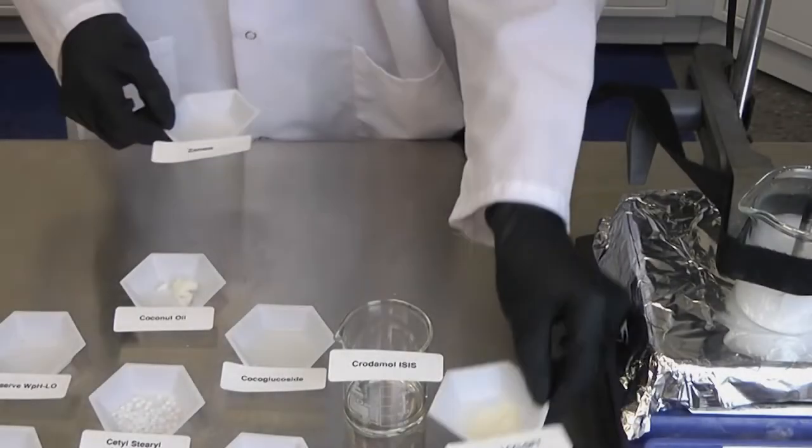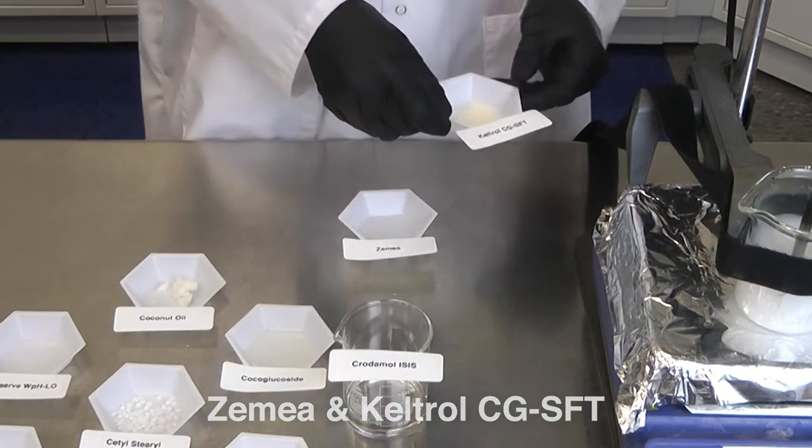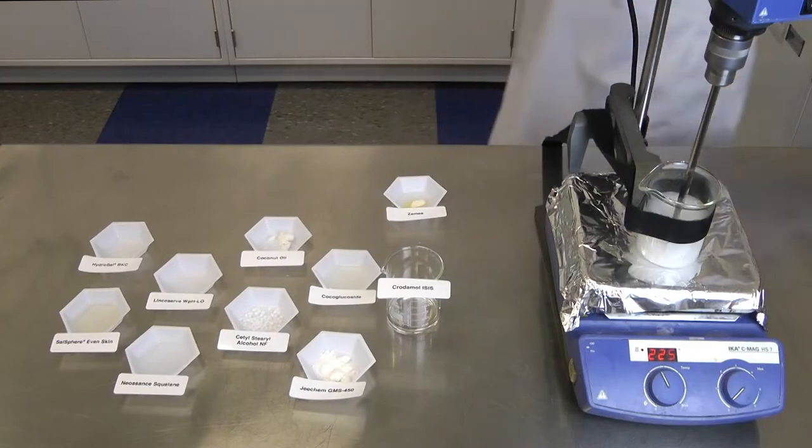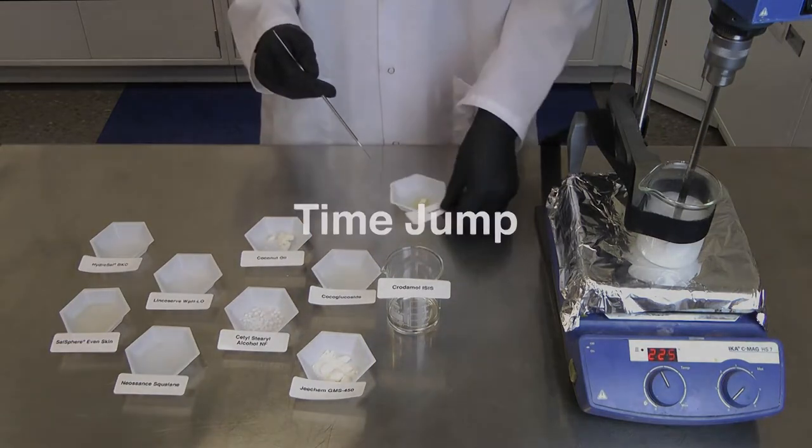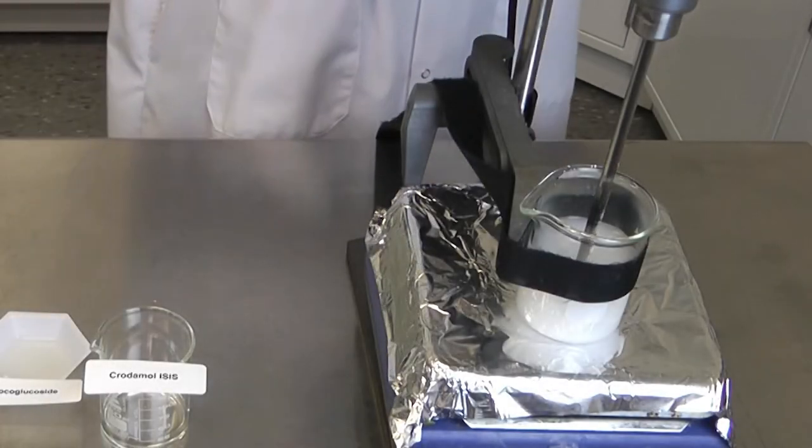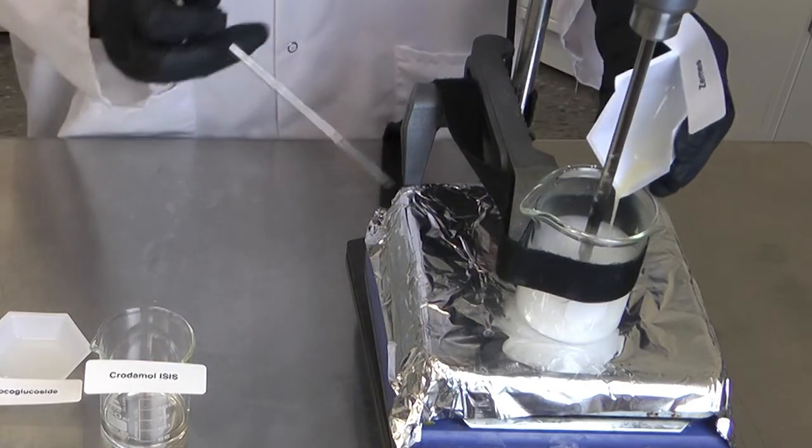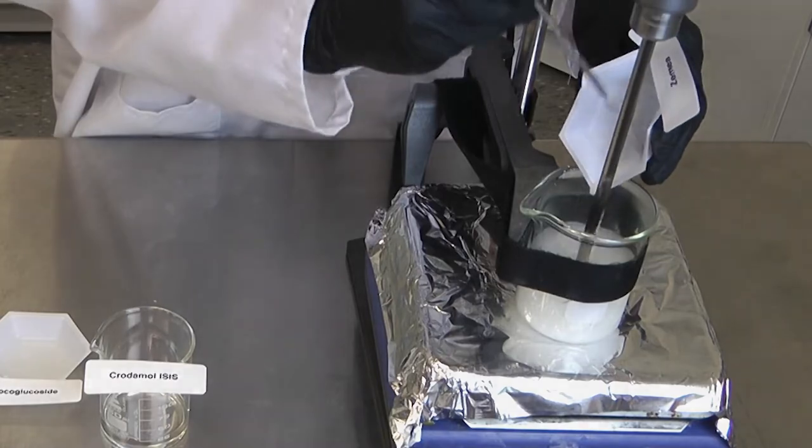Our next step is to make a pre-mix of xanthan gum and propane diol. The xanthan gum will eventually thicken the water phase, and we are pre-mixing it with the propane diol to aid in its solubility into the water. Now that the xanthan gum is well dispersed in the Zemea, we will add it to our formulation. This should thicken the formulation a small amount, so increasing the propeller speed may be necessary.